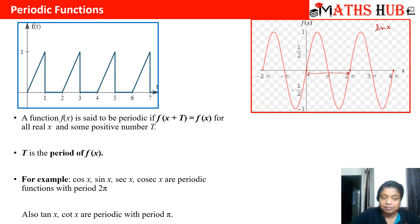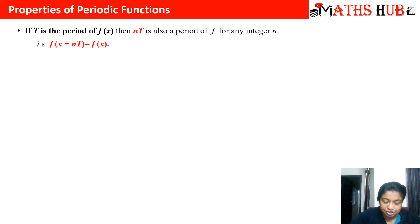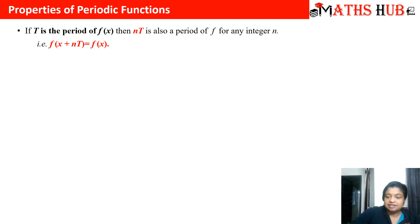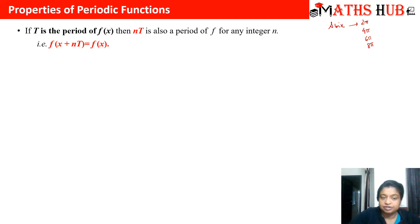Now let us understand some properties of periodic functions, which we will need when solving Fourier series expansions. Property 1: if t is the period of a function, then any integer multiple of t is also a period. For example, the period of sin x is 2π, so we can also say the period of sin x is 4π, 6π, 8π, and so on. Here 2π is the fundamental period, and multiplying it by any integer also gives a valid period.